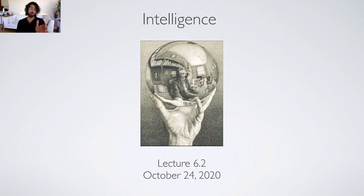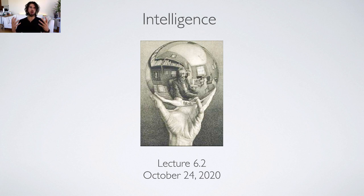Lecture 6.2. I want to pick up just where we left off with 6.1, talking about the limits of our cognitive abilities, and in particular, the limits of our cognitive abilities with reference to the social brain hypothesis.